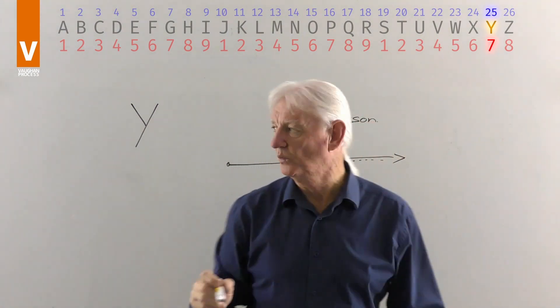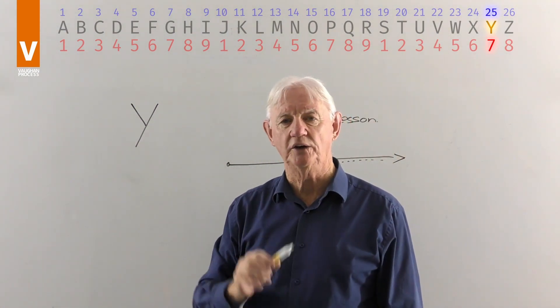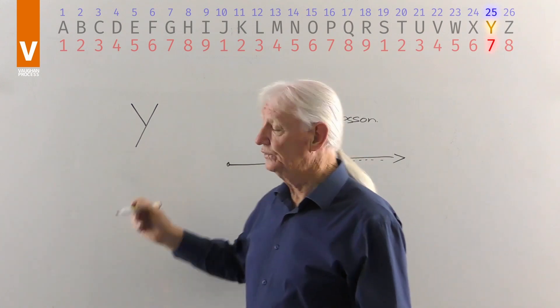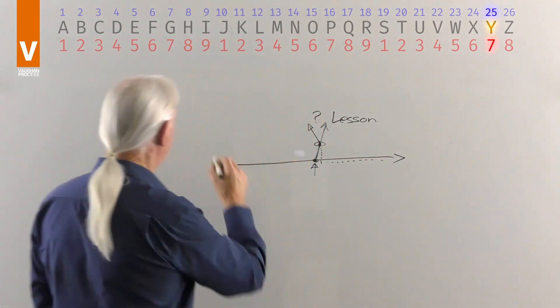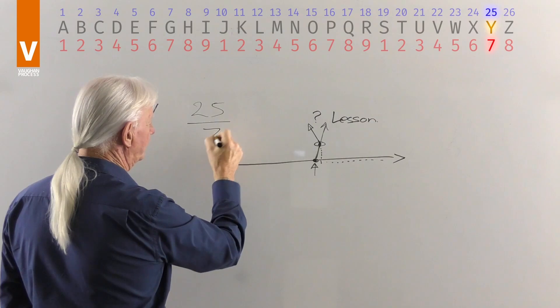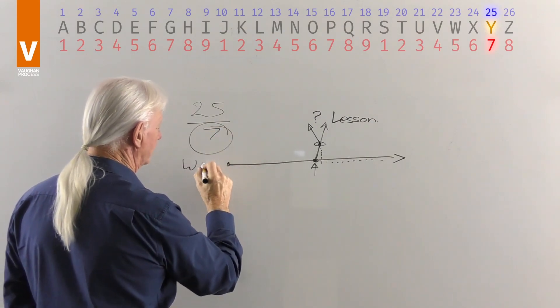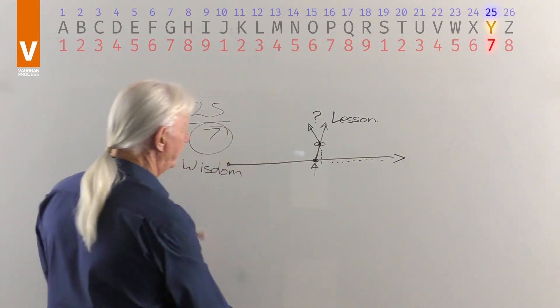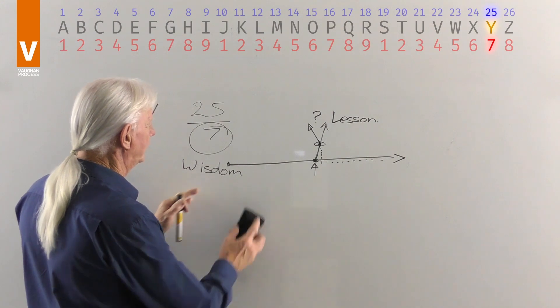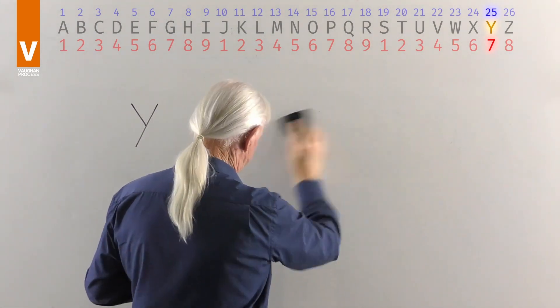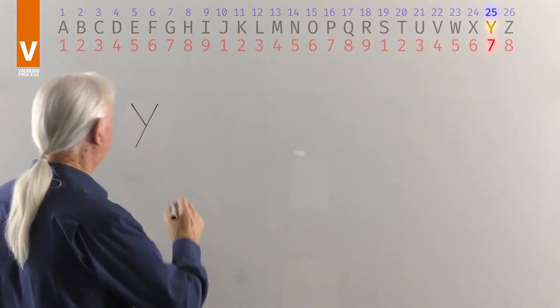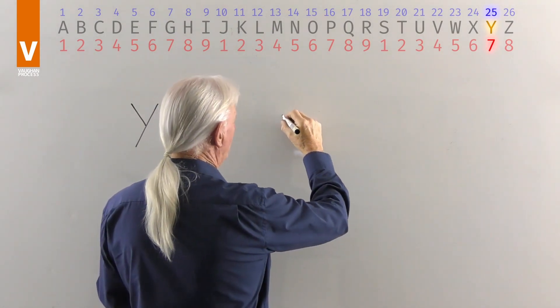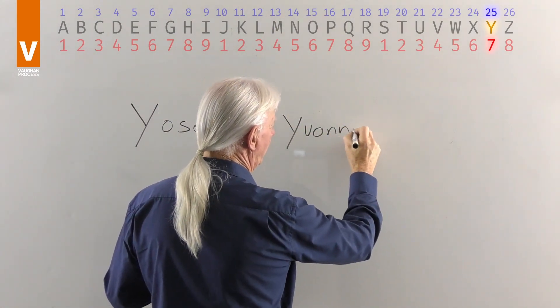Understand that the letter Y represents you will learn lessons until you understand and think about what you're doing. The letter Y is the 25th letter of the alphabet and two and five equals the number seven and that represents the key word wisdom. Wisdom means to understand what you're doing so this is a very important letter to understand and with that as a male's name I've got Yosef Y-O-S-E-F and for girls I've got Yvonne Y-V-O-N-N-E.